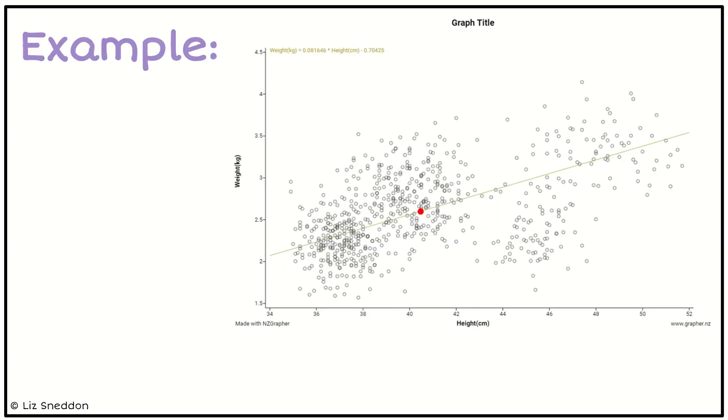So let's have a look at an example. Here is the kiwi bird dataset and it's looking at the height and weight of kiwi birds. You'll notice I've got this prediction line in the middle there and I've just highlighted that a bit darker for you to see, and at the top we've got the equation.